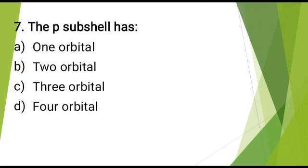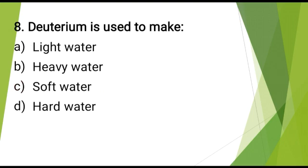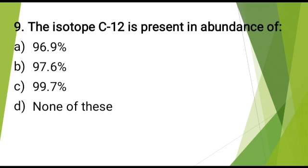The P-subshell has? The correct answer is: 3 orbitals. Deuterium is used to make? The correct answer is: heavy water. The isotope C-12 is present in abundance of? The correct answer is: none of these.